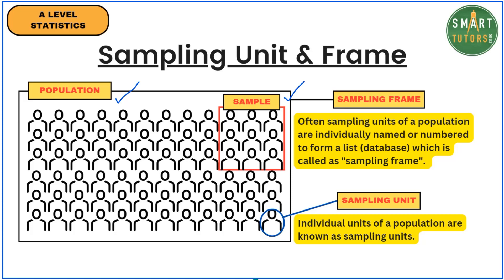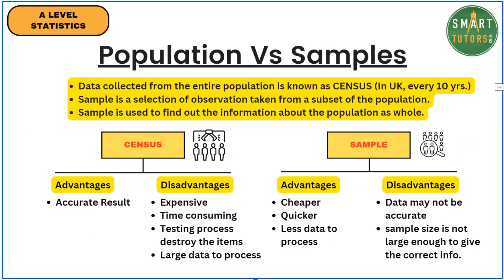Now, population versus samples — this is very important. You need to know at least one advantage and one disadvantage of each. Data collected from the entire population is known as a census. In the UK, a census is carried out every 10 years. The examiner is looking for that phrase: data collected from the entire population is known as census.